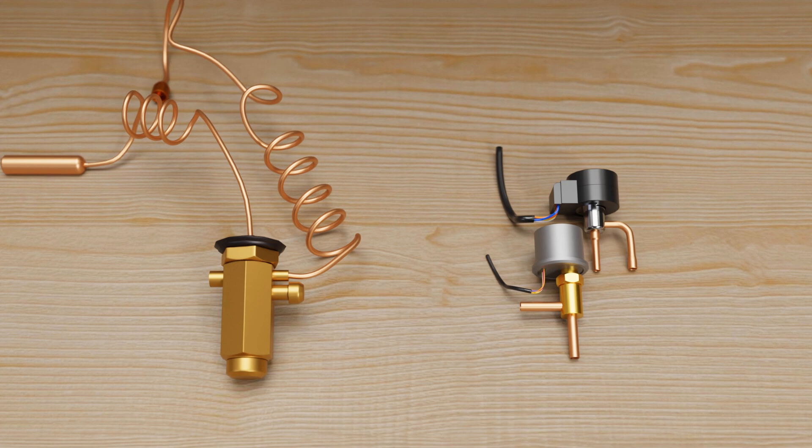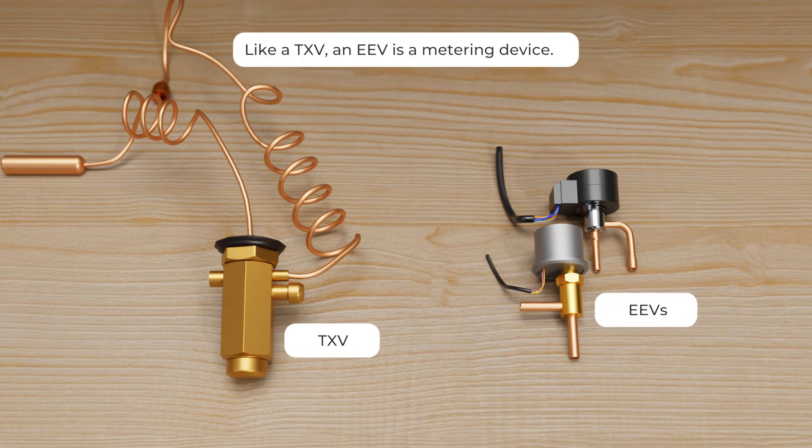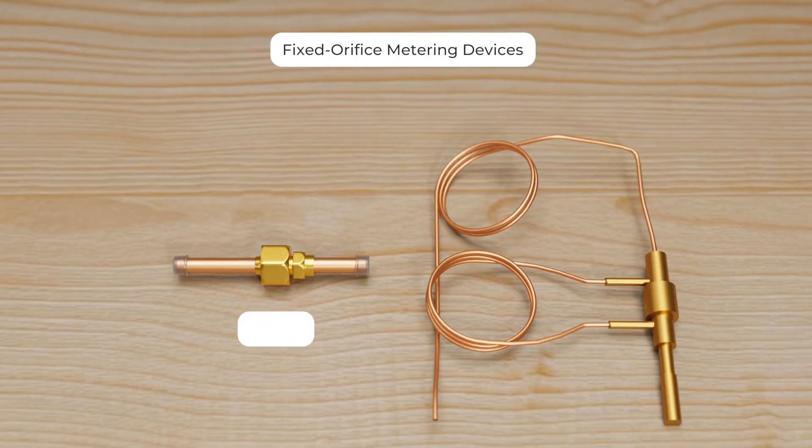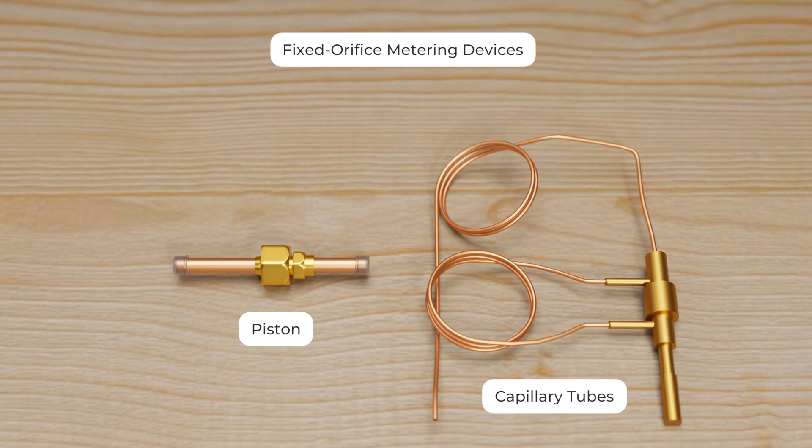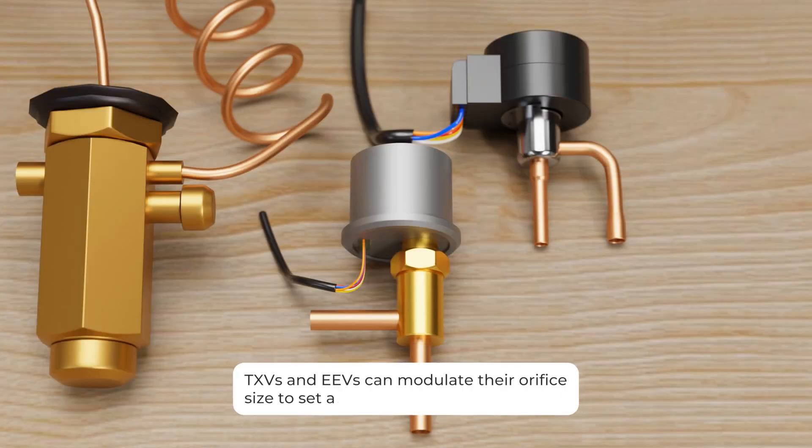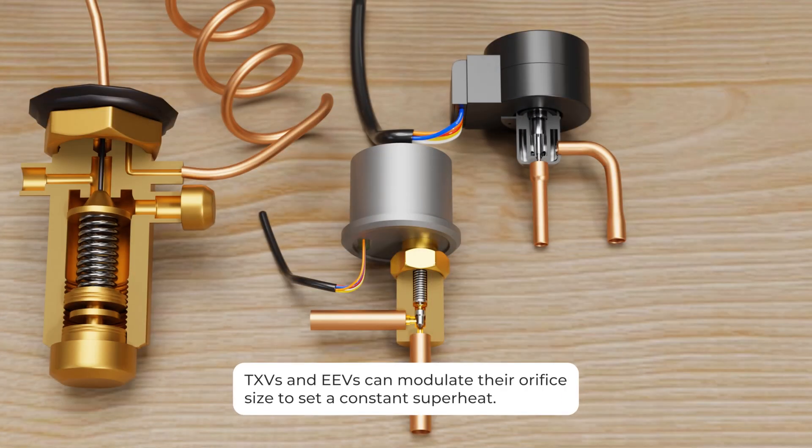Like a thermostatic expansion valve or TXV, an EEV is a metering device. It drops the pressure of liquid refrigerant. Unlike older fixed orifice metering devices, both TXVs and EEVs can modulate their orifice size to set a constant superheat.